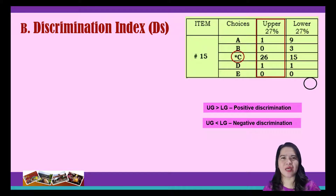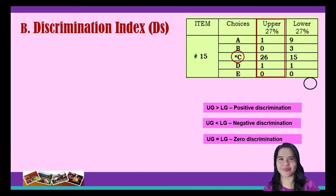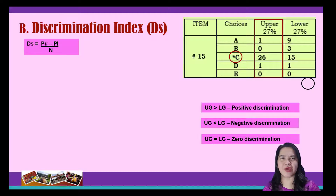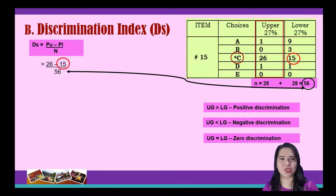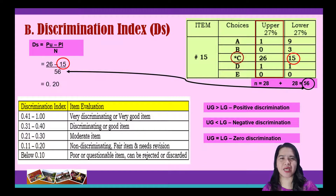However, if the same number of high and low achievers make the correct response, we say that it has a zero discrimination. This suggests that the item is either too easy or the item is ambiguous. Now, substituting the values to the formula, we have 26, which is the total number of students who got the correct response from the upper group, minus 15. We divide it by 56, which is the sum of the test takers from the upper group and lower group — 28 plus 28, which makes it 56. Hence, the answer is 0.20. Looking at the table, the item is considered as non-discriminating or a fair item that needs revision.